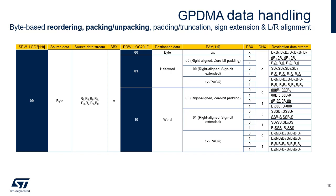Byte-based destination reordering is also supported. If the destination data width is larger than the source data width, the source data is either right aligned and padded with zeros, or sign extended up to the destination data width, or is FIFO queued and packed up to the destination data width. If the destination data width is smaller than the source data width, the source data is either right aligned and left truncated down to the destination data width, or is FIFO queued, unpacked, and streamed down to the destination data width.